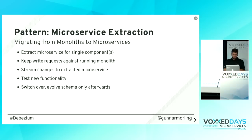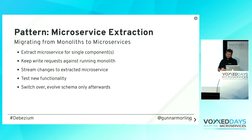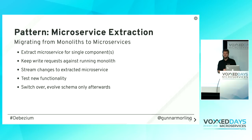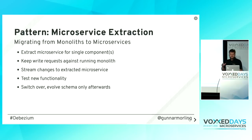CDC can also be used to extract microservices from existing codebases. Say those three components are part of one monolithic application and you want to extract the stock component. You start building the new service on the side, still keeping the old monolithic application running in production. You use CDC to stream all changes from the old system to the new service so it has essentially the same data set. You can test whether it behaves correctly, and once you're satisfied you switch traffic to the new component. During this transition period CDC keeps the extracted microservice and the monolith in sync.